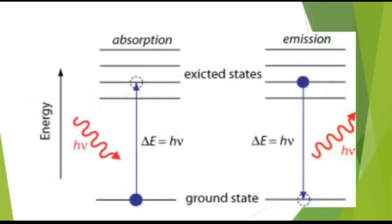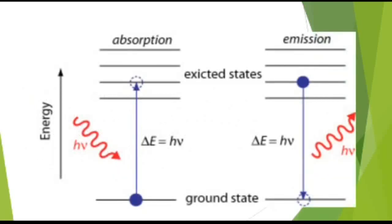A diagram illustrates the absorption and emission processes: electromagnetic radiation interacts with matter, where the excited state and ground state transitions correspond to emission and absorption of energy respectively.